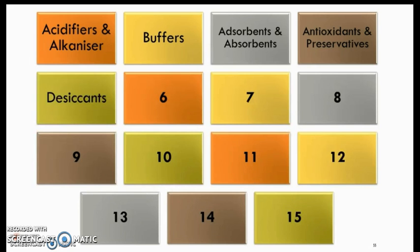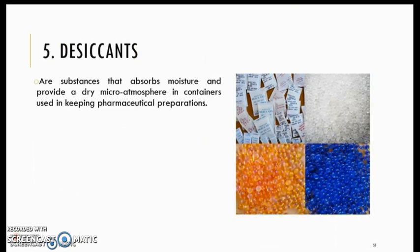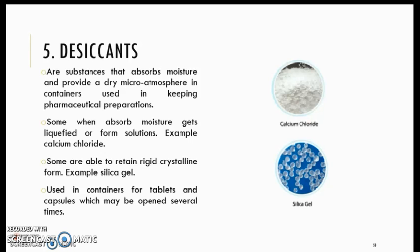Fifth is desiccants. Desiccants absorb moisture from the drugs and also from the atmosphere. Some desiccants, when they absorb moisture, will turn into liquid — for example, calcium chloride. But some retain their rigid crystal form, such as silica gel. They are not put into the drug itself, but they help the drug to stay stable in its bottle.